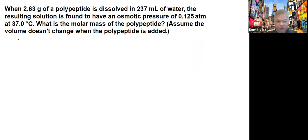This is an osmotic pressure problem, so we have π = MRT. If we're going to look at the given here, we're given the osmotic pressure, which is 0.125 atmosphere. We're given the mass, which is 2.63 grams.